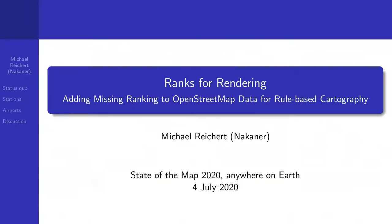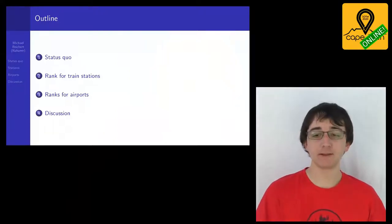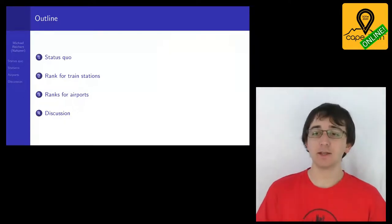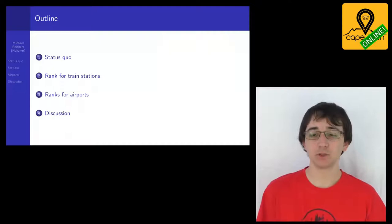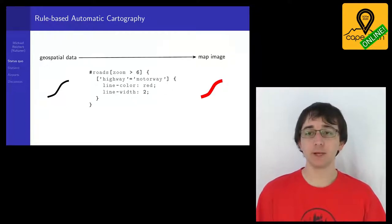Welcome to my talk, 'Ranks for Rendering: Adding Missing Ranking to OpenStreetMap Data for Rule-Based Cartography' at State of the Map 2020. I will show you how ranks are required for good cartography when differentiation between feature classes in OSM has too large gaps or feature classes are too wide. Rule-based cartography is the transformation from geospatial vector data to a map image using a set of rendering rules.